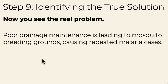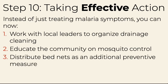There are probably other causes and this is undoubtedly more complicated, but this is an example. It turns out that poor drainage maintenance is leading to mosquito breeding grounds, causing repeated malaria cases. Once you've asked why five times, what you find is very different from where you started, regardless of how much or how little you know about malaria and the context of that particular community.